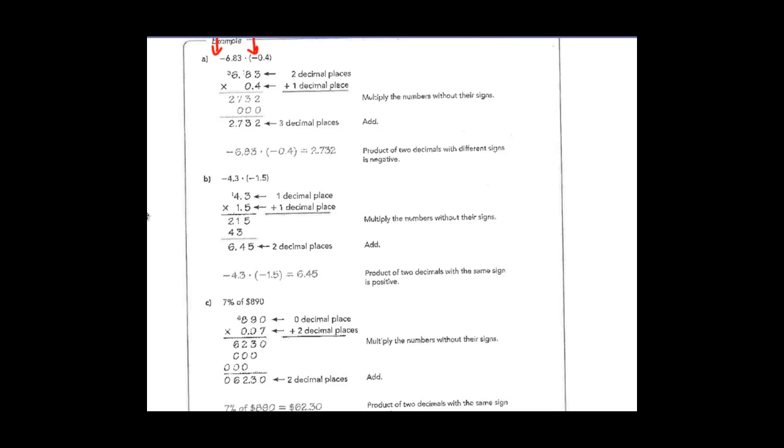Take a moment and review examples A and B. In example A, remember with decimals — a key thing to remember is you do not have to line up the decimal points. You multiply and then in the answer you bring down how many decimal places, moving from right to left. This answer has to be 2 and 732 thousandths because we need three decimal places, since our product had a total of three decimals. A negative rational number times another negative rational number is a positive — so there's a mistake in the example; the product of two decimals with a negative sign is positive.